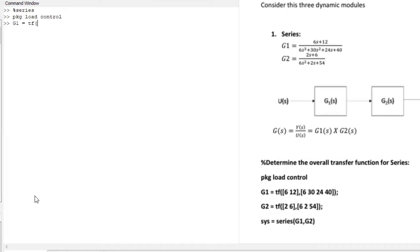is tf open bracket, square bracket 6 12 close the square bracket, comma, square bracket 6 30 24 40. Perfect. I wanted it to appear so I won't use any semicolon there. And let's see if we didn't make any mistakes. Perfect, there we go. So here's the first transfer function, the G1 as you can see, same way as on the equation that we initially started with.